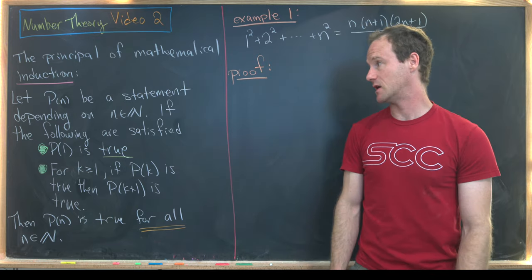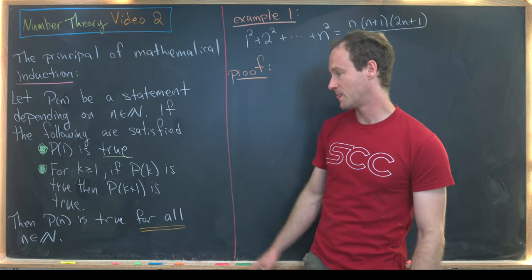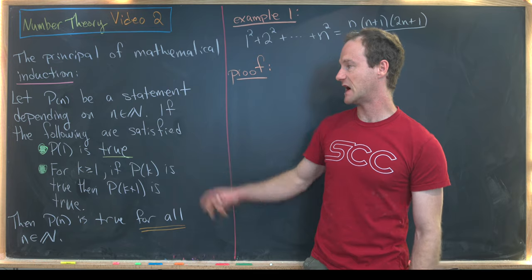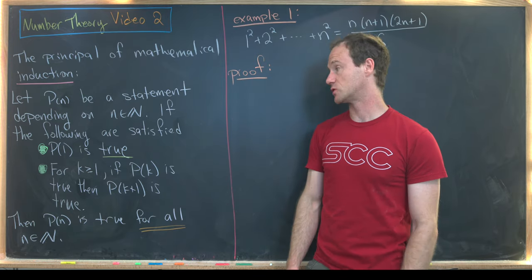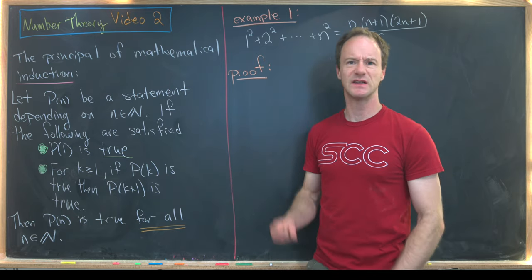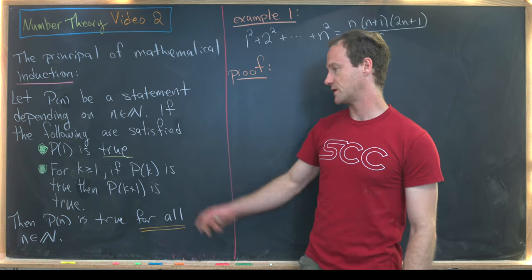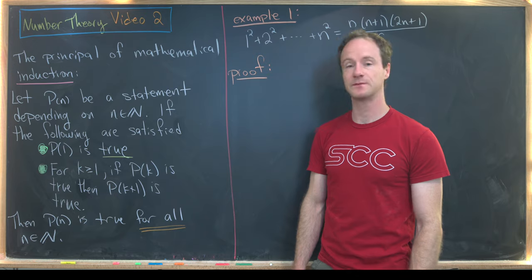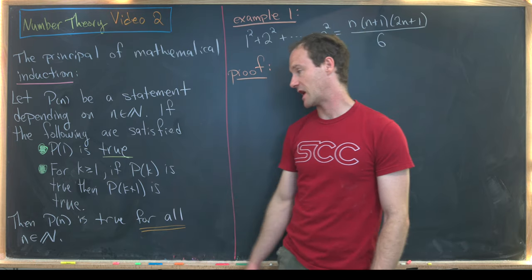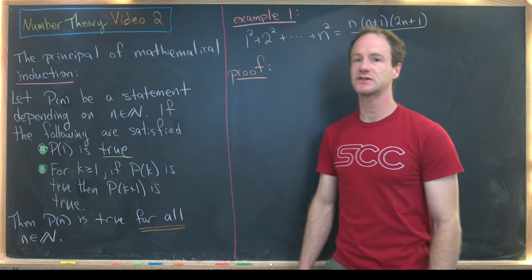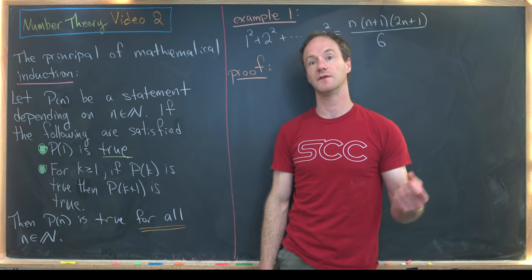We want to let P of n be a statement depending on n. Then if the following two things are satisfied, P of n is true for all natural numbers n. First, P of 1 is true — that's sometimes called the base case, because it gets the whole induction argument off the ground. Next, we prove the induction step: for k greater than or equal to 1, if P of k is true, then P of k plus 1 is true. The assumption that P of k is true is the induction hypothesis, and the conclusion that P of k plus 1 is true is the induction step.